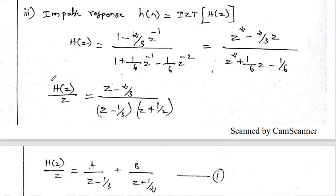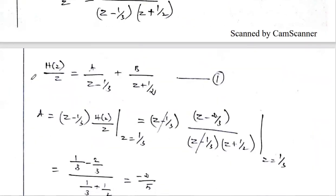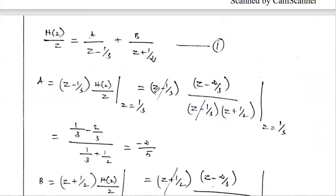Before partial fraction expansion, we keep one z in the denominator. So H(z)/z = (z − 2/3) / [(z − 1/3)(z + 1/2)]. In the partial fraction method, H(z)/z can be written as A/(z − 1/3) + B/(z + 1/2). We need to calculate A and B.